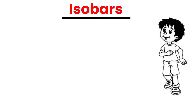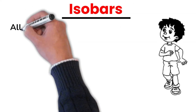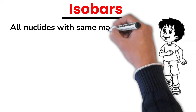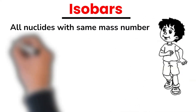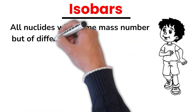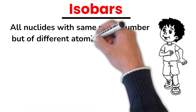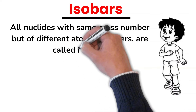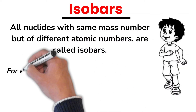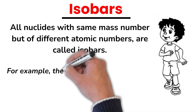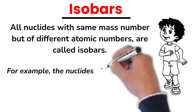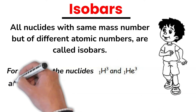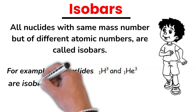All nuclides with same mass number, but of different atomic numbers, are called isobars. For example, the nuclides tritium and helium-3 are isobars.